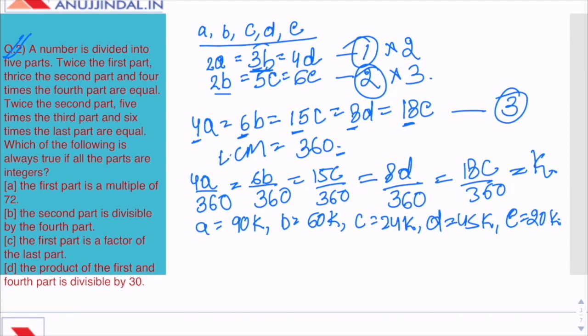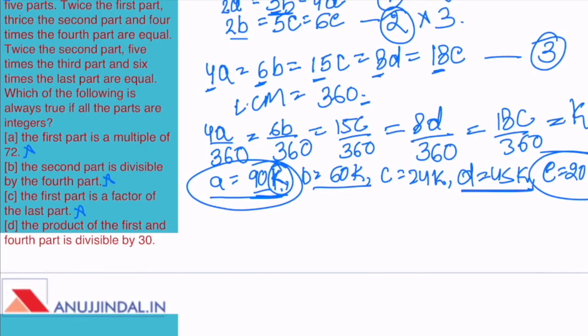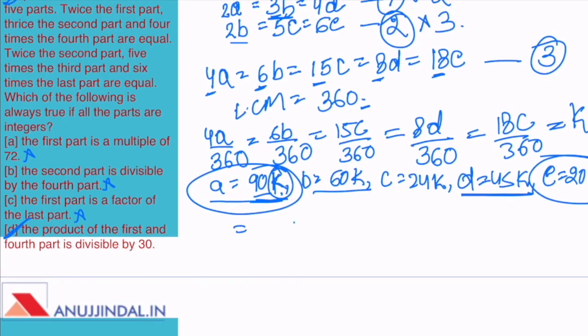Option A: The first part is a multiple of 72. We know a equals 90k. If we put any odd value as k, like k equals 1, then it's not a multiple of 72. So option A is incorrect. The second part is divisible by the fourth part - second part is 60k and fourth part is 45k, it is not true. The first part is a factor of the last part - first part is 90k and last part is 20k, clearly wrong as well. The product of the first and fourth part is divisible by 30. Although it's the only option left, we'll still check it. 90k into 45k divided by 30 gives 135k, which is an integer. Hence this is right.